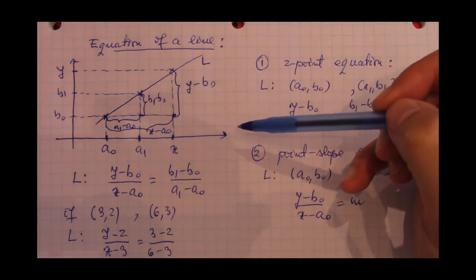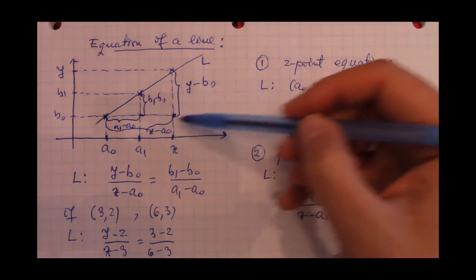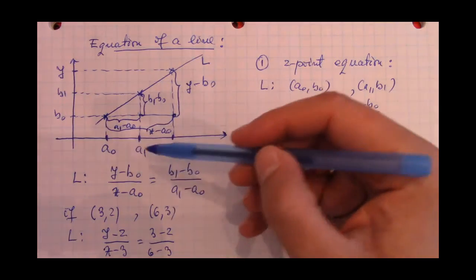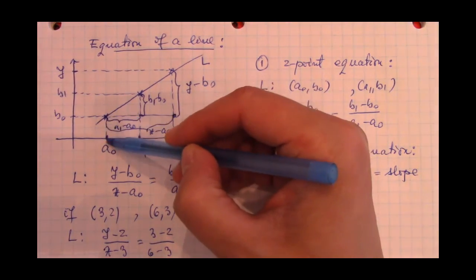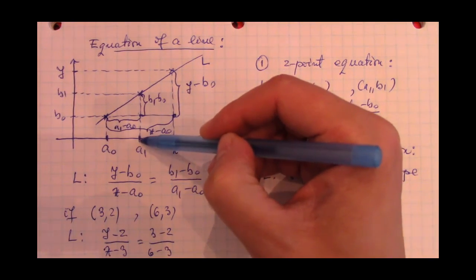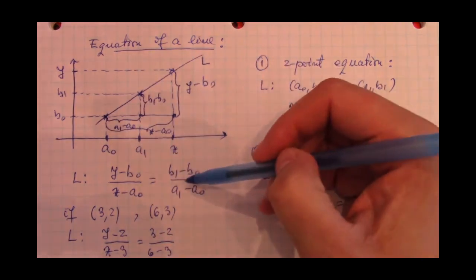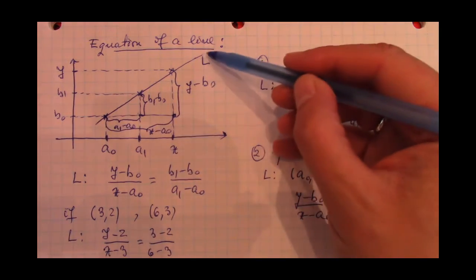In order to do that, let's look at a two-dimensional system of coordinates x and y. And let's consider this point here, whose coordinates are a0 and b0, and this point here, whose coordinates are a1 and b1. We do know that these two points will determine a line. Let's call this line L.